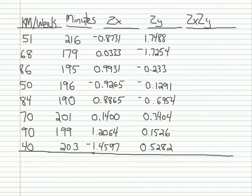This example of computing a correlation looks at the relationship between the number of kilometers run per week and a runner's marathon finish time in minutes. What you're seeing are the original values in the first two columns, and in the columns labeled zx and zy, these are the z-scores.